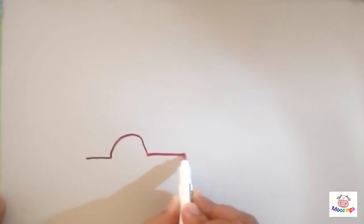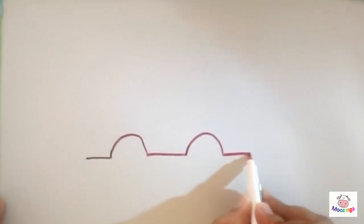Then another longer line than the first one. Then another semicircle. Then another straight line. These two lines could be almost equal.